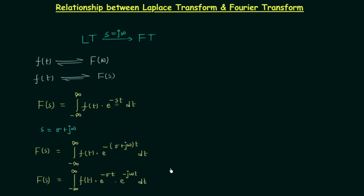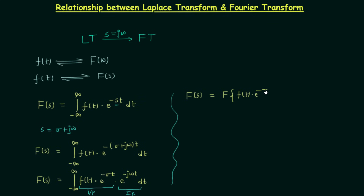Now compare the right-hand side with the Fourier transform — we have e^(−jωt), which is the integral kernel, and the input signal f(t)·e^(−σt). So we can say the Laplace transform F(s) is equal to the Fourier transform of f(t) multiplied by e^(−σt). We can see that F(s) here is the bilateral Laplace transform.